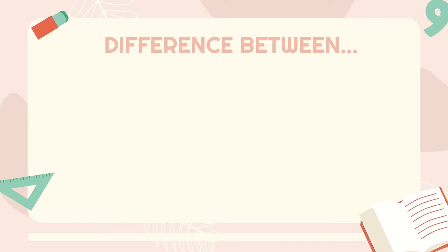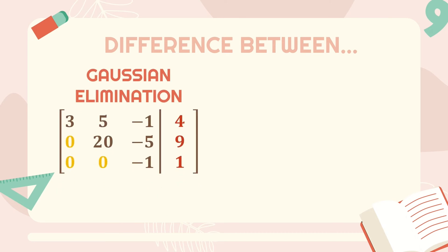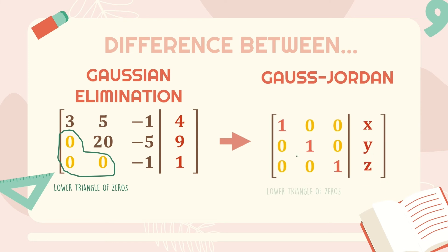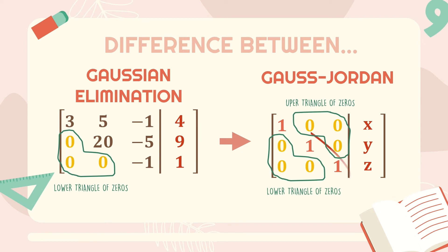But first of all, let's see the difference between Gauss-Jordan elimination method and the Gaussian elimination method. Both of them are very similar, since Gauss-Jordan is like the continuation of Gauss elimination. The difference is that in Gauss-Jordan, instead of only finding the lower triangle of zeros, we also need to find the upper triangle of zeros and then make a diagonal of positive ones.